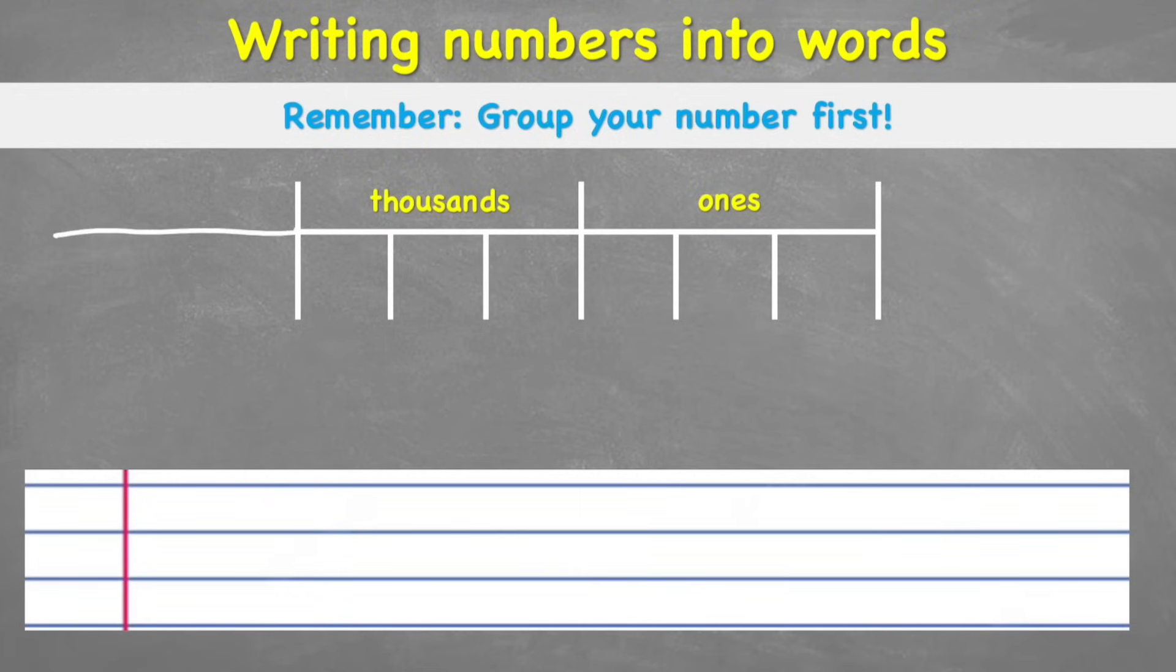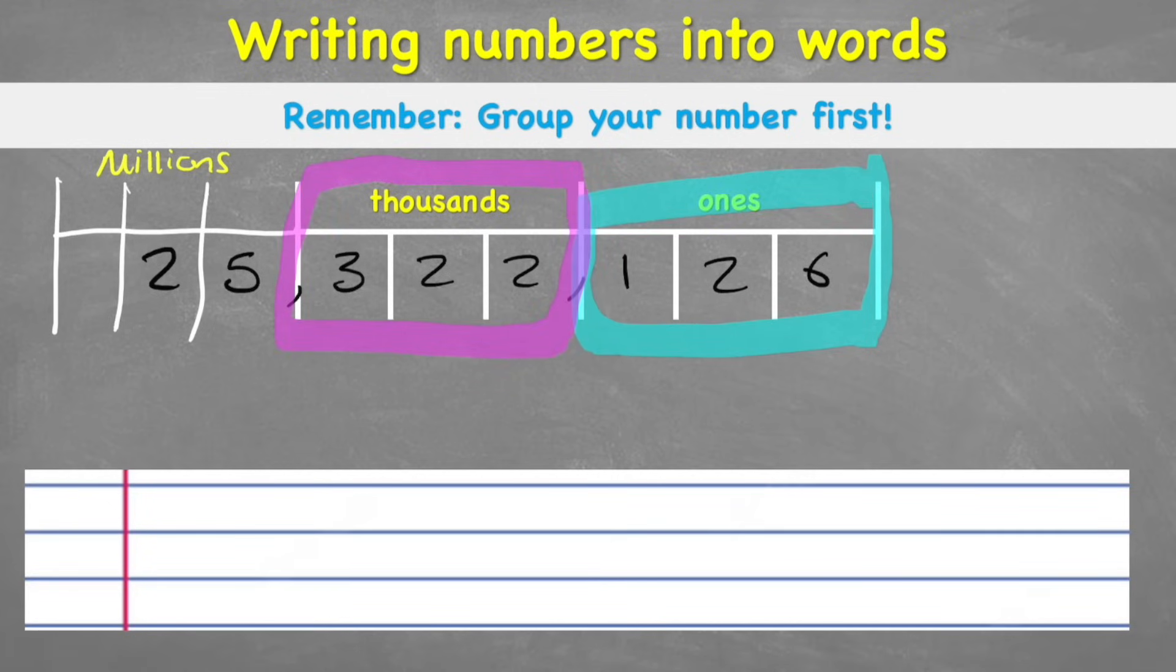It could get longer. We could come into our millions. So let's write a number including my millions. Let's have 25,322,126. But again, all I have to do is group my numbers into 3 starting from the ones. So I have 3 digits here, I have 3 digits in my thousands, and I don't quite have 3 digits in my millions. But that's fine. But therefore it's really important to remember that we must always group from our ones first. Because if I group 3 numbers here, starting from my millions, I would end up getting it wrong. When we're grouping, it's really important to remember, start to group from the ones.